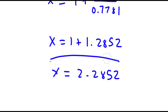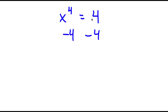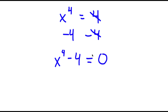So this is my answer. Now in this problem, I have x to the power of 4 is equal to 4. So I'm going to first start by subtracting 4 on both sides. So then these two cancel out, and now I have x to the power of 4 minus 4 is equal to 0.